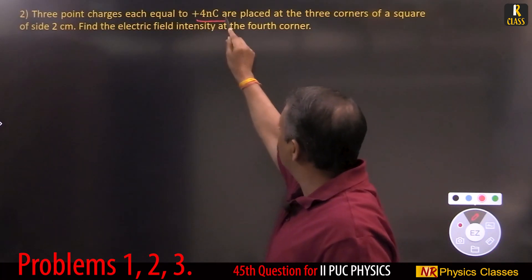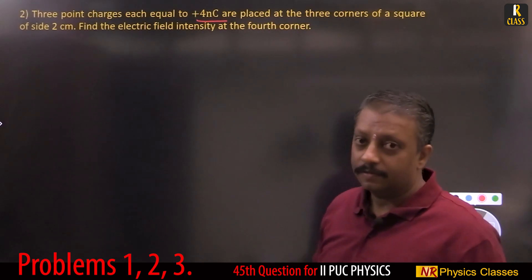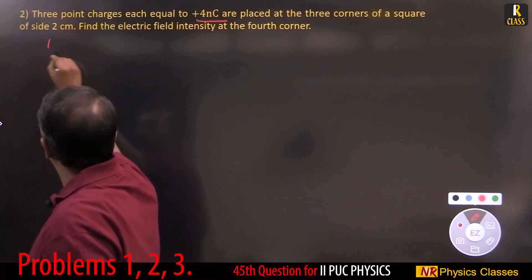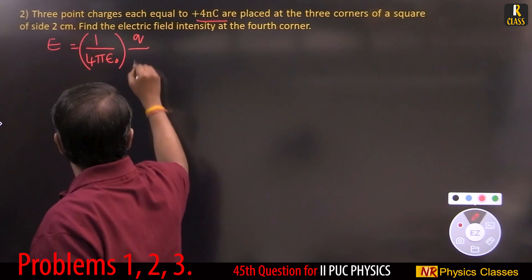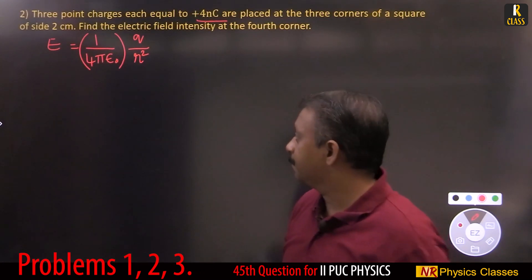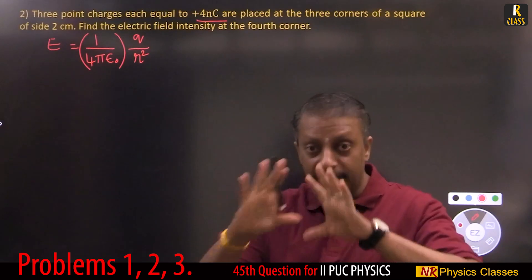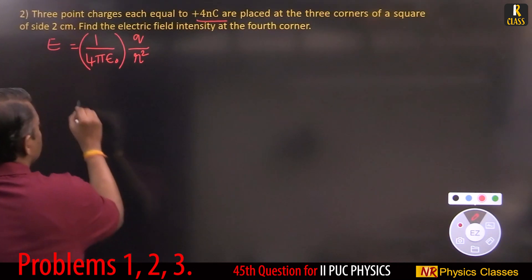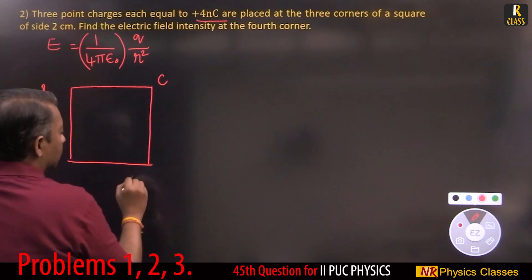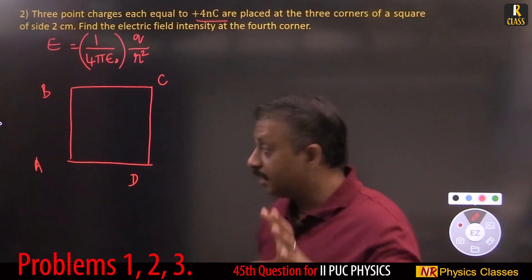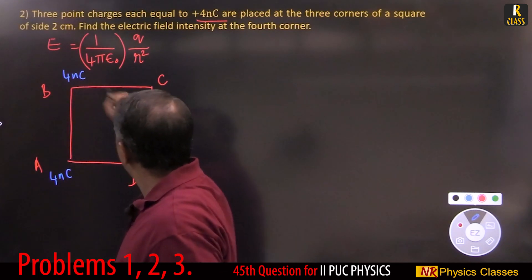Next problem: three point charges, each 4 nano-coulomb, are placed at three corners of a square of side 2 centimeter. Find the electric field intensity at the fourth corner. First write the formula: E = (1/4πε₀) × (q/r²). Formula earns one mark. Then draw a diagram — use scale, pencil, and eraser. Label the square A, B, C, D. Charges are at A, B, C — each 4 nano-coulomb.